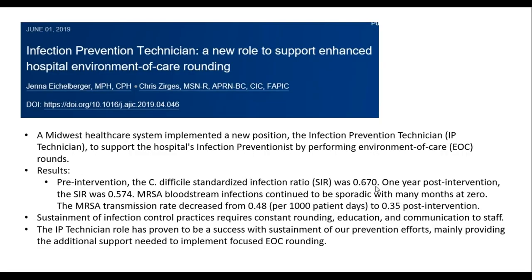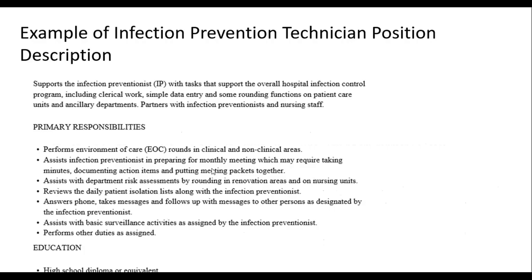Then we have the infection prevention technician. The technician role is a 100% support role. The way they use them in this specific article on APIC was to assist with environment of care rounding, but other places use them for environment of care rounds in clinical and non-clinical areas, assisting IPs for monthly meetings, assisting with department risk assessments by rounding in renovation areas and other nursing units, answering phones, and assisting with basic surveillance and activities assigned by the IP. There are a lot of different opportunities — and for this role, the minimum education is a high school diploma or equivalent.